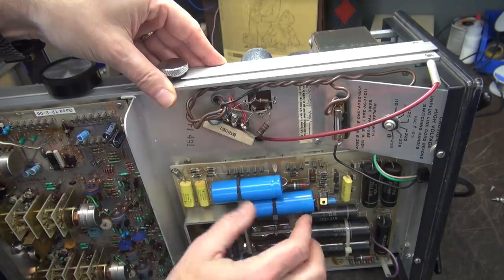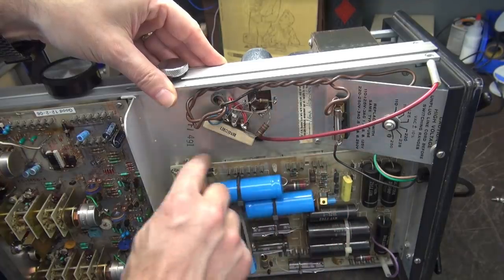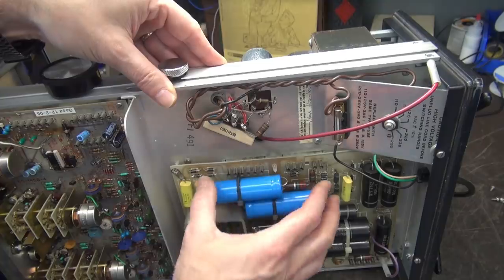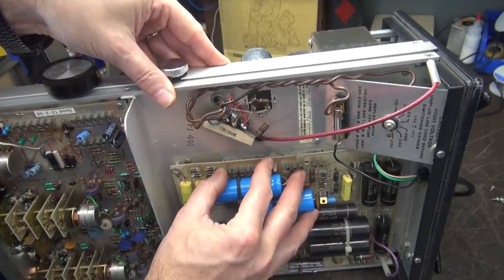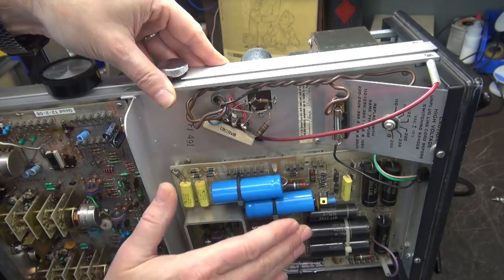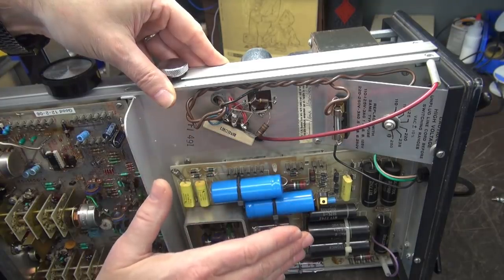So what happens is the board bows here in the center and these connections remain loose. They will not lock in and you'll have poor connections which will cause all kinds of issues with the scope.